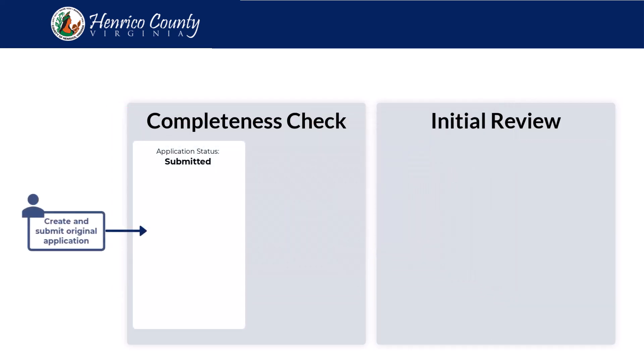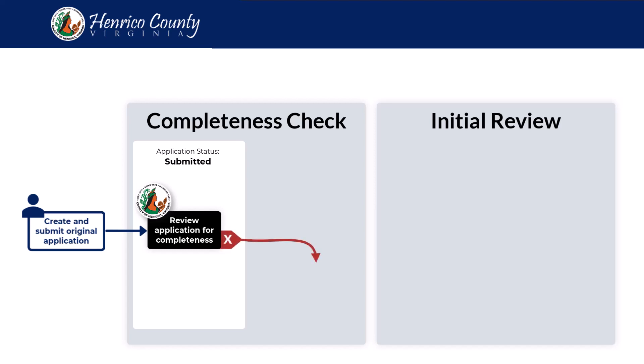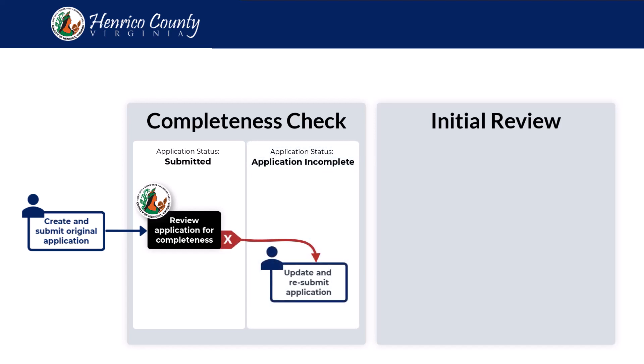After you've submitted your application, county members will perform a high-level completeness check to ensure all required information has been provided. If issues are found, your application status will change to Application Incomplete. Let's look at this in BUILD Henrico.